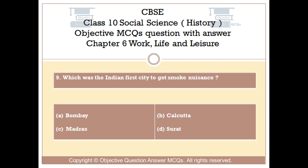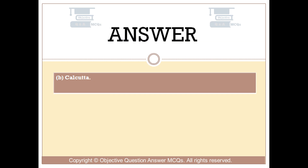Question number 9: Which was the first Indian city to get smoke nuisance? Option A: Bombay. Option B: Calcutta. Option C: Madras. Option D: Surat. The right answer is Option B: Calcutta.